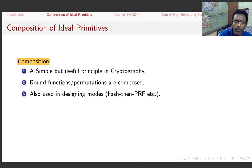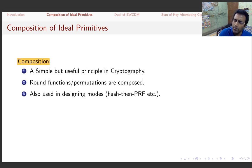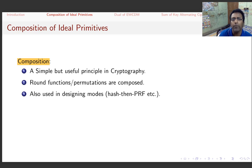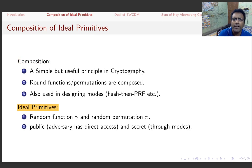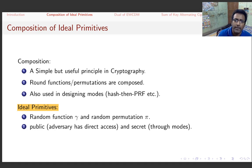We now move to compositions of ideal primitives, which is the basic paradigm for analyzing our attacks. Composition is a simple but useful principle in cryptography — used in block ciphers, hash functions, and designing modes such as hash-then-PRF variants. The ideal primitives we consider are random functions, denoted γ, and random permutations, denoted π.